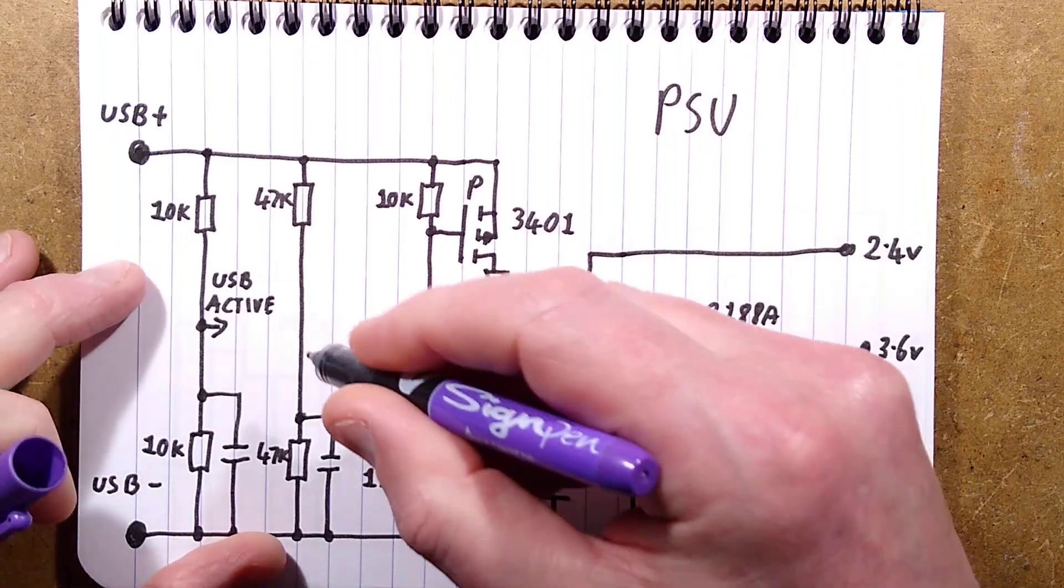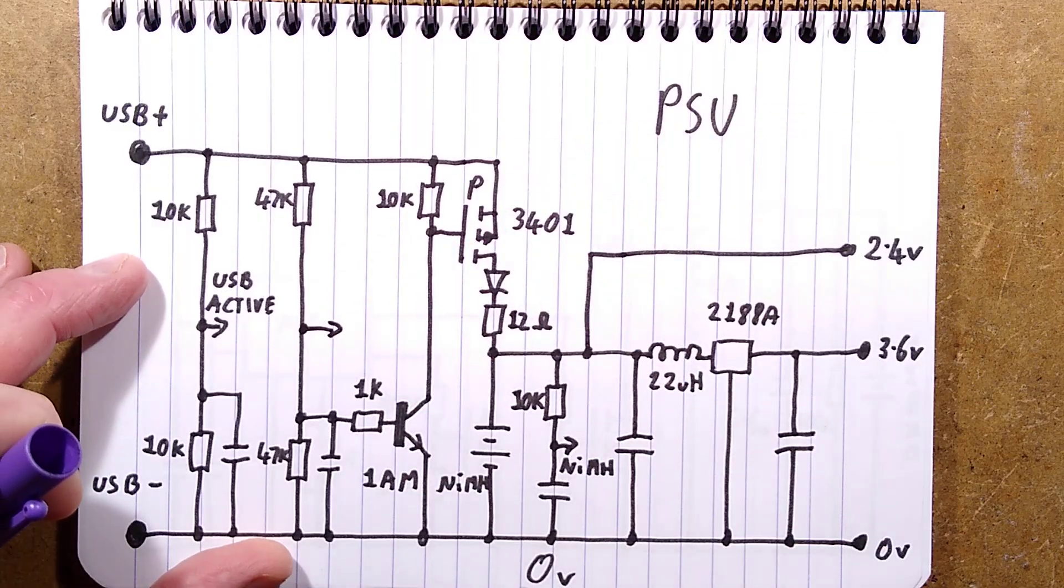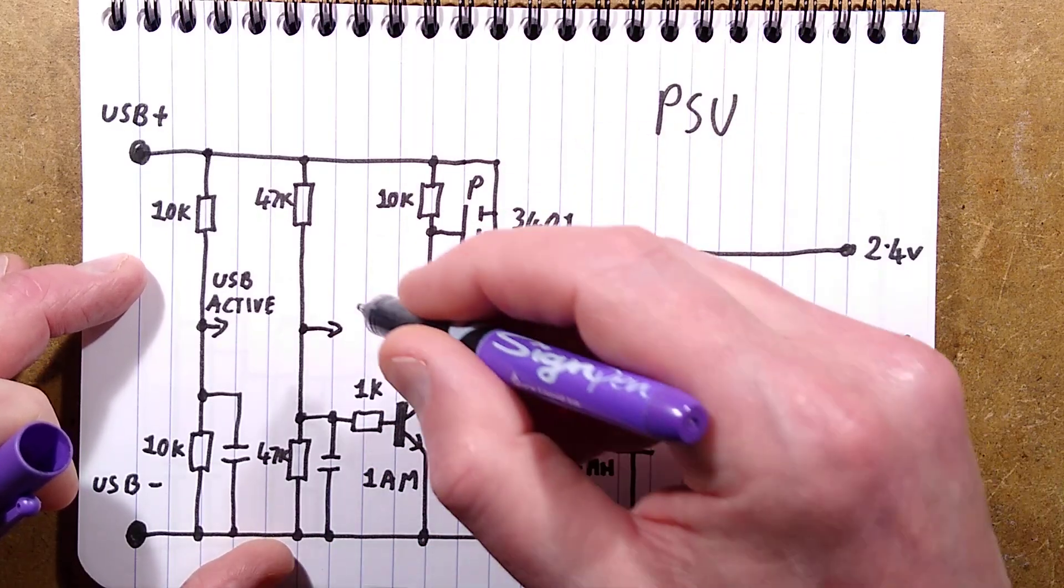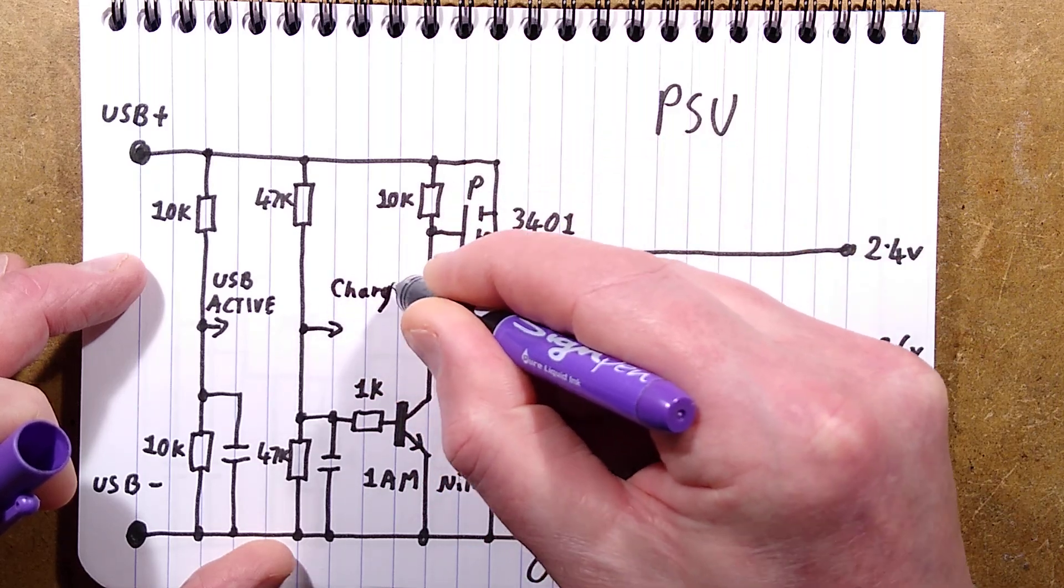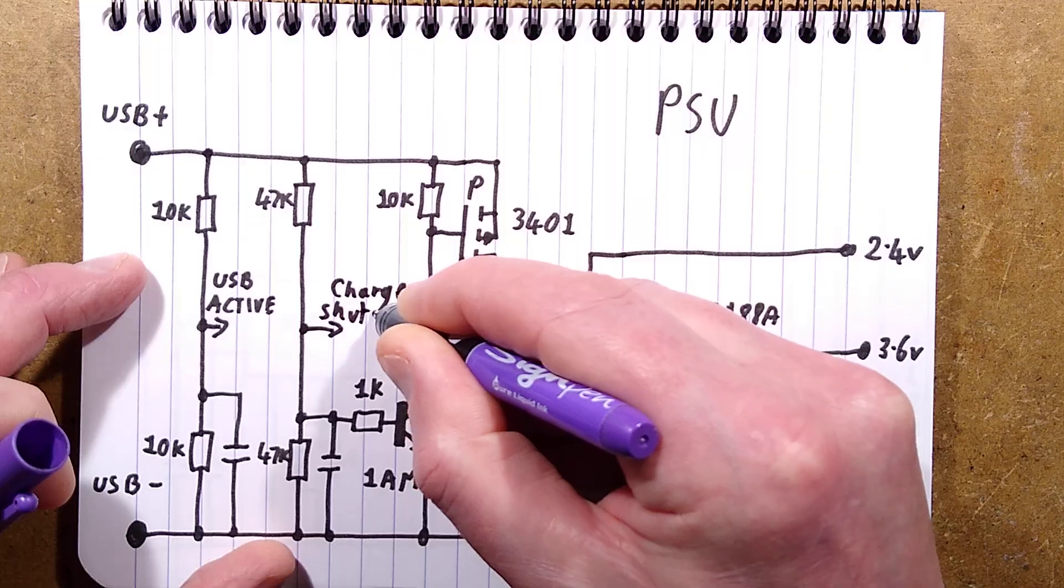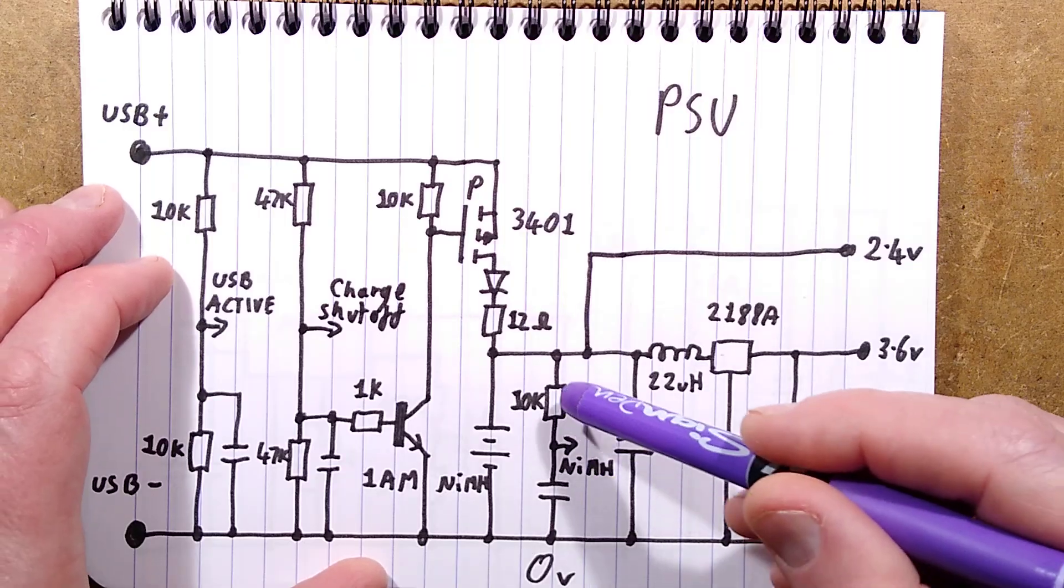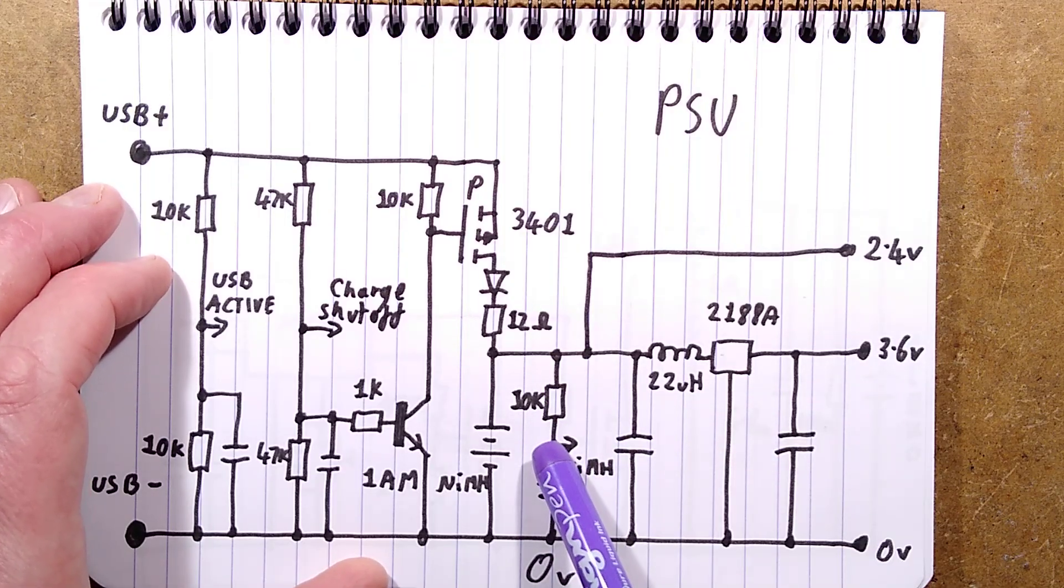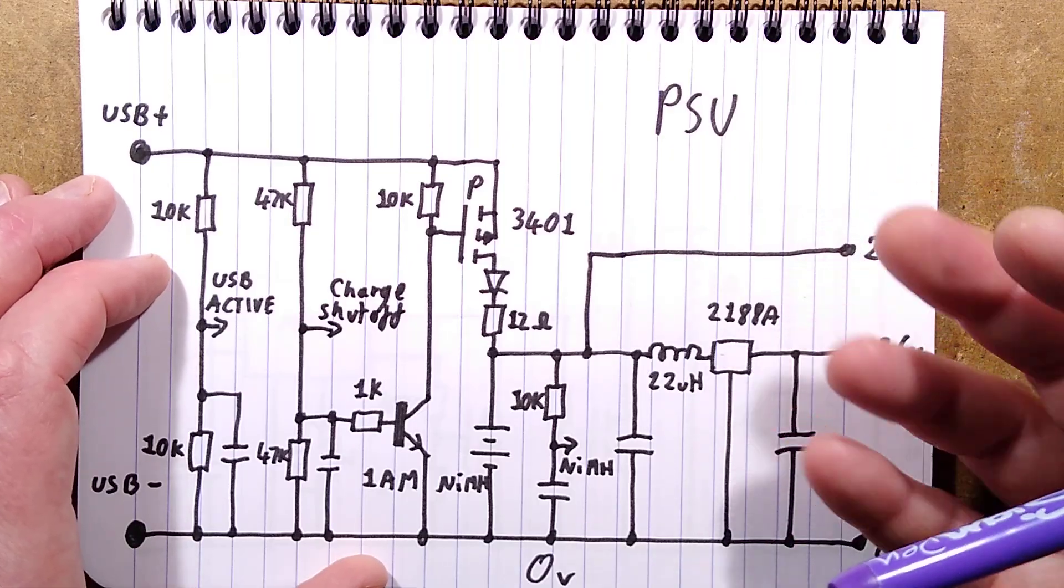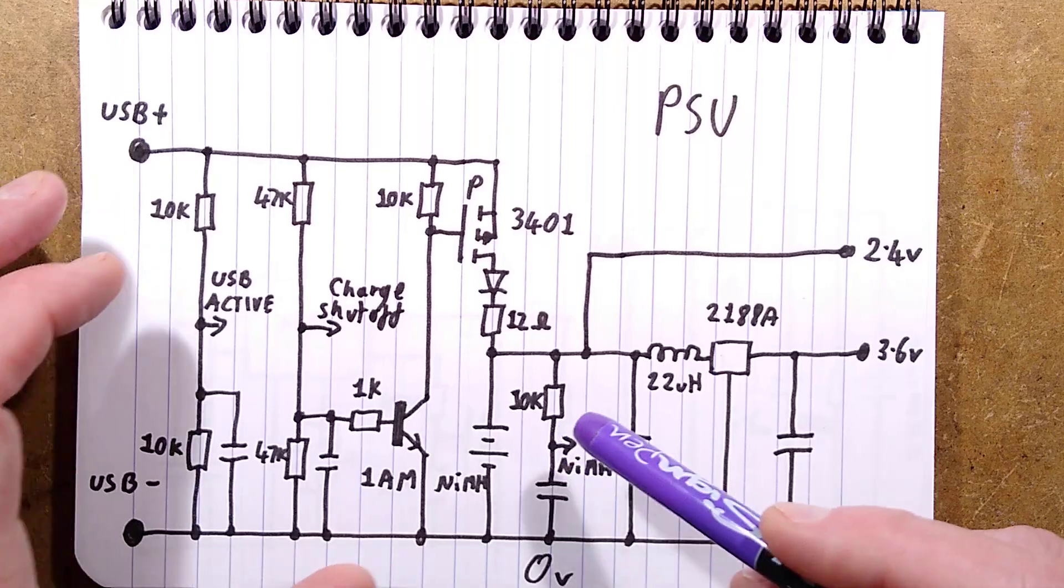So, the processor can override that. If it wants to turn this off, it has a connection going over to the processor that it can pull low so it can basically say charge shut off. The nickel metal hydride cells have a resistor and a capacitor for decoupling and then that signal also goes over to the processor. So, presumably that's an analog input and it can monitor the voltage across the two nickel metal hydride cells.